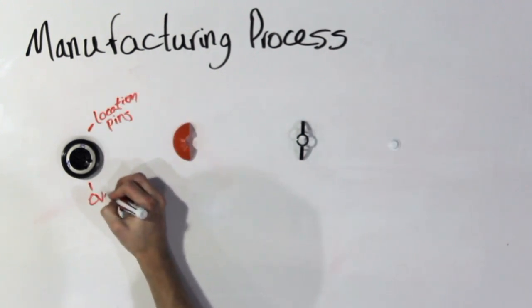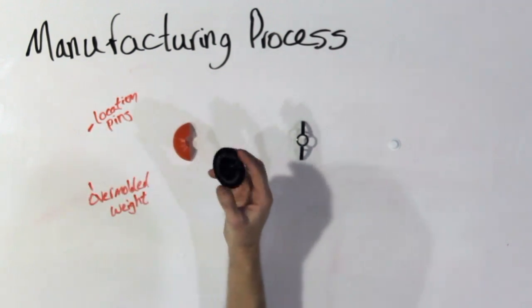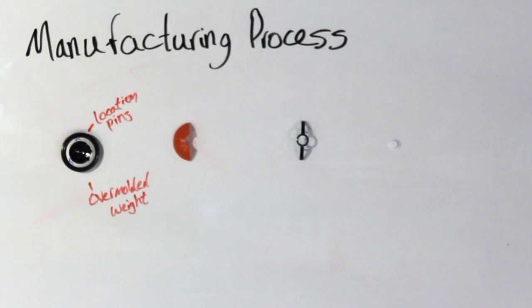The two most important features of the base are the location pins and the integrated weight. We used the ejector pins in the molding machine to form the location pins and the weight was held in place magnetically and overmolded.